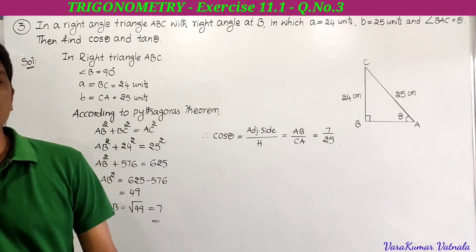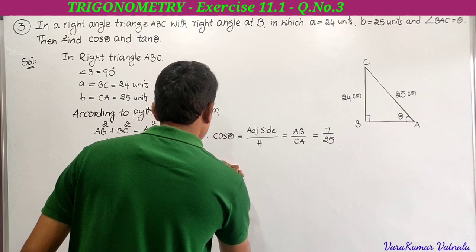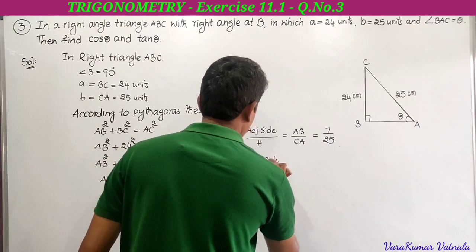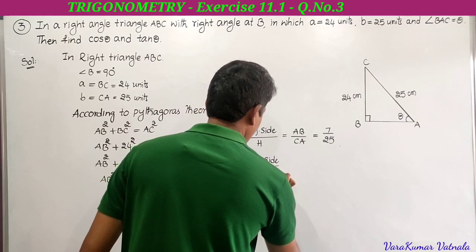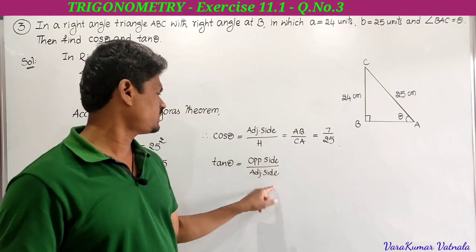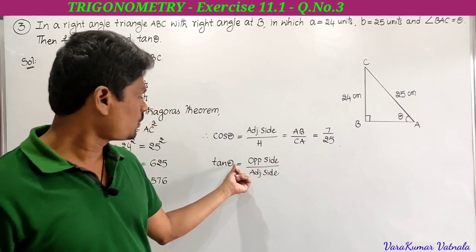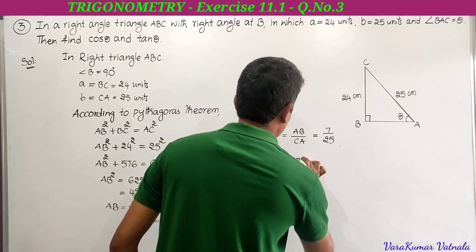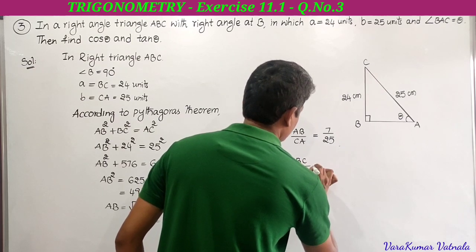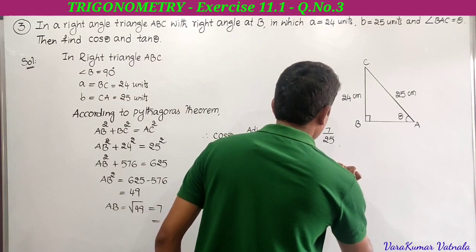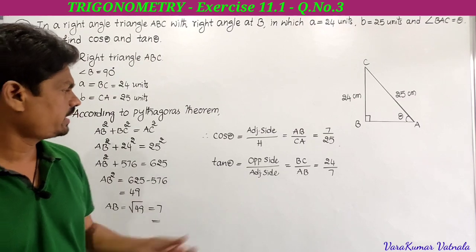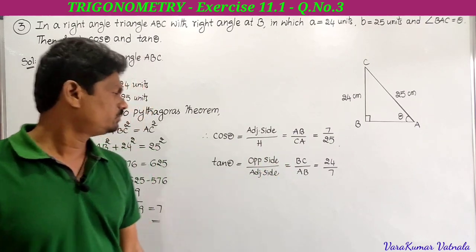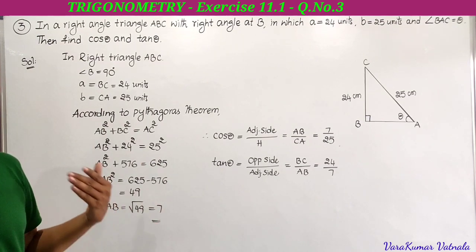So cos theta equals 7 by 25. Tan theta equals opposite side by adjacent side. Opposite side to theta is BC, adjacent side is AB. So tan theta equals BC by AB, which is 24 divided by 7. Therefore cos theta equals 7 by 25 and tan theta equals 24 by 7. This is the third problem in exercise 11.1.